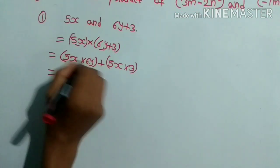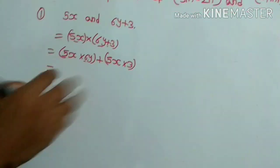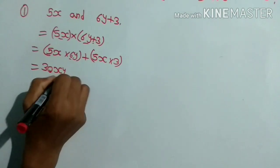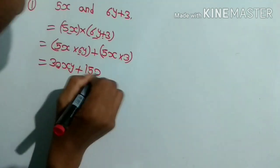Now we will multiply the first constant. 5 times 6 is 30xy plus 5 times 3 is equal to 15x.